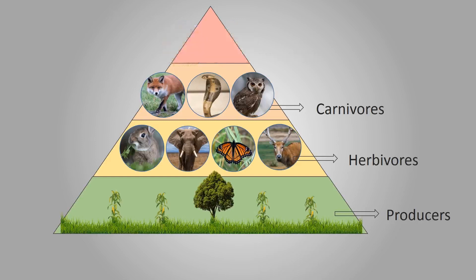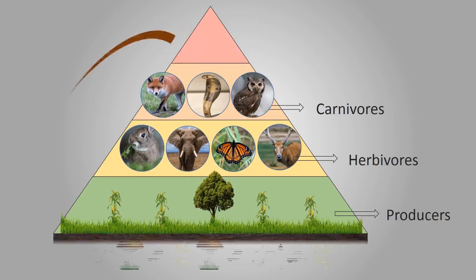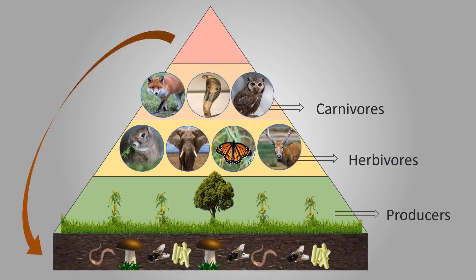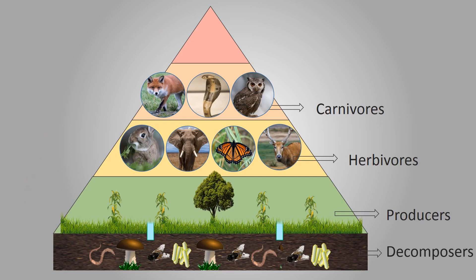After the death of apex consumers, their energy becomes available to the decomposers. Decomposers convert them into simple carbon compounds, which easily mix with air, water, and soil, from where they are again absorbed by plants and incorporated into the food chain.